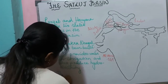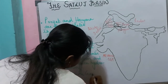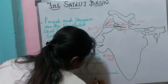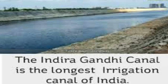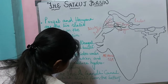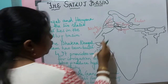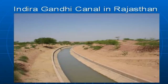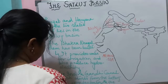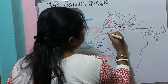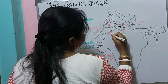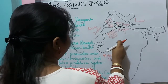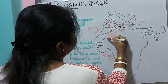The Indira Gandhi Canal starts from the Satluj river and provides water to the drier parts of Rajasthan. This canal is very important for supplying water to the drier regions of Rajasthan.